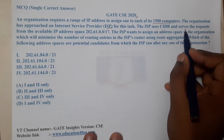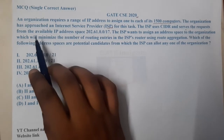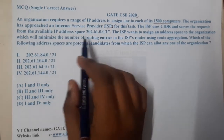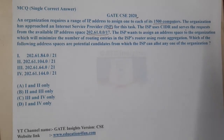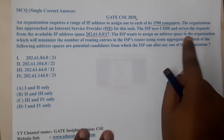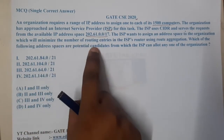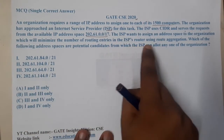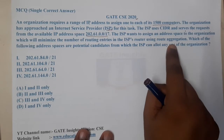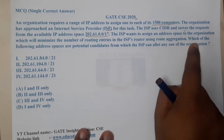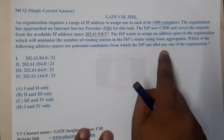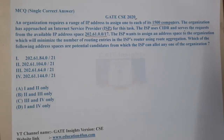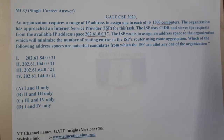The ISP wants to service the request using the available IP space. The ISP wants to assign an address space to the organization which will minimize the number of routing entries in the ISP router using route aggregation. So basically, among the given options, which address space can the ISP allocate to the organization?